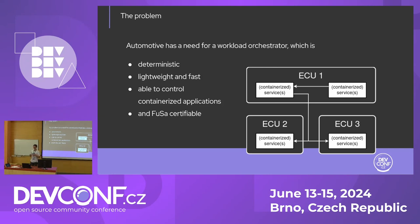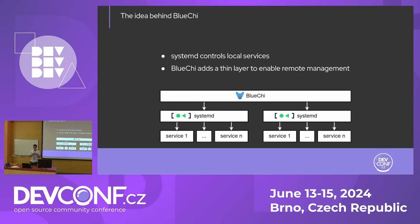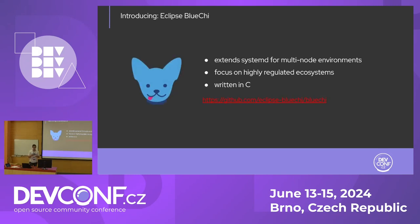And of course it needs to be able to control containerized applications. Last but not least, we want it to be FUSA-certifiable, so we can run it on all ASIL levels essentially. The idea behind BlueG is to use systemd as a local service manager, and BlueG adds a thin layer on top of this to enable remote management. That's exactly what BlueG is — an extension for systemd for multi-node environments with a focus on highly regulated ecosystems such as cars.